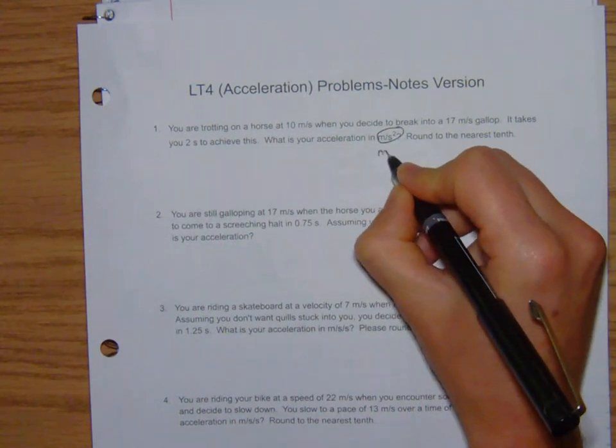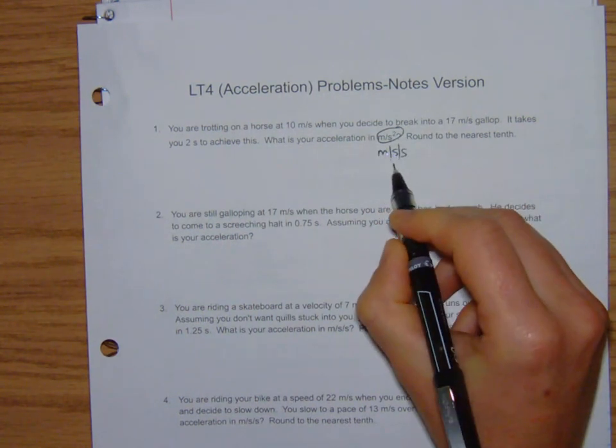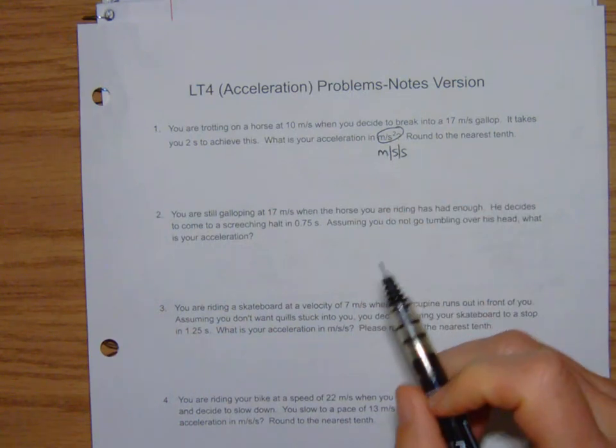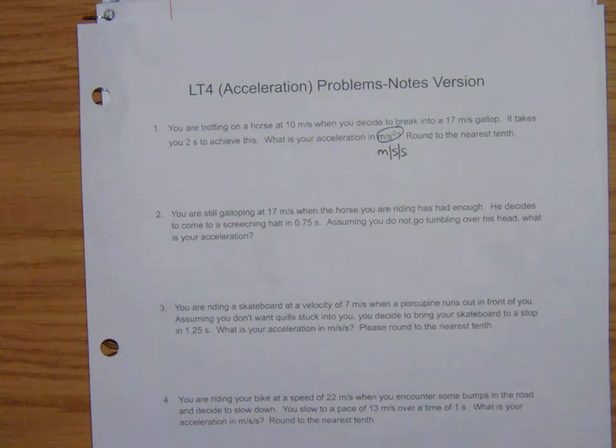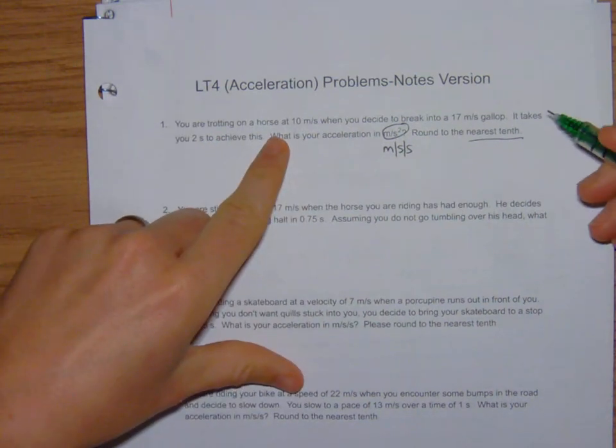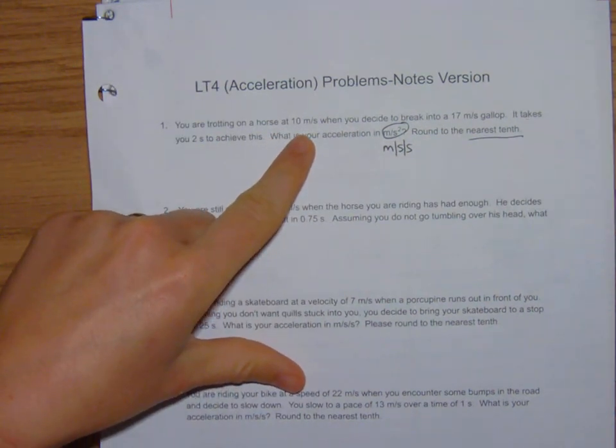What is your acceleration in meters per second squared? Don't let that get in your head. That's just the unit for acceleration. You won't type that into Moodle anyways. It doesn't mean you square the answer. It's just the units. And then round to the nearest tenth like we almost always do. If you think back to LT2 which was average speed, remember it's really useful to label stuff.